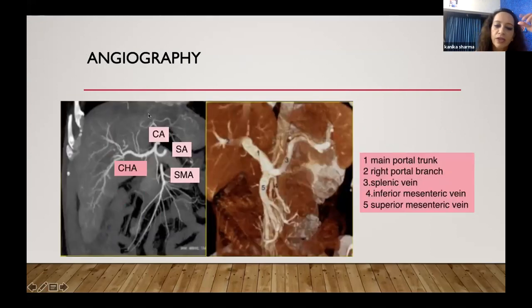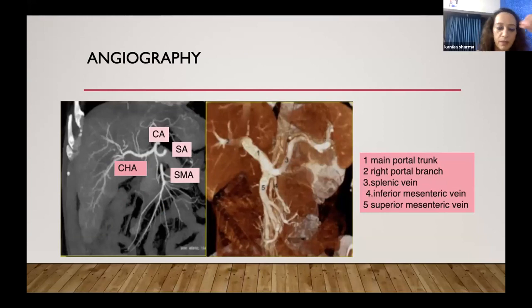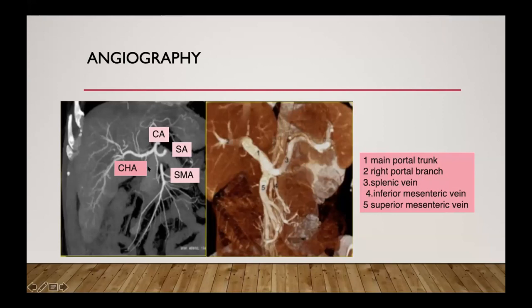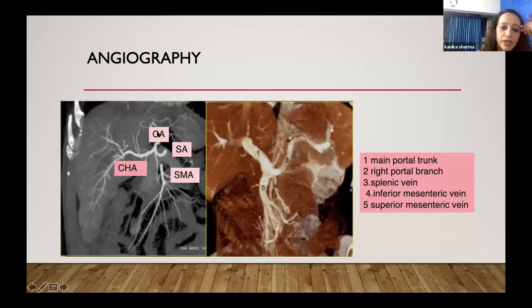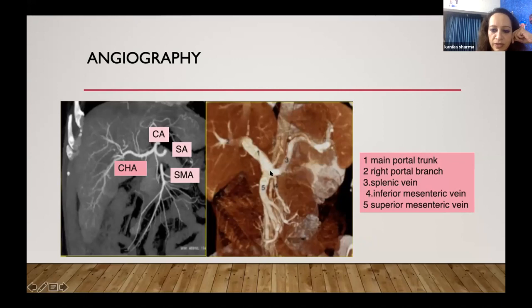Angiography is one of the best ways to understand the anatomy, but axial anatomy is most important for contouring. On angiogram you can appreciate the celiac artery arising at D12, dividing into three branches: splenic, common hepatic, and gastric. The superior mesenteric is caudal to the celiac. In the venous system, the main portal trunk and right portal branch are visible. The splenic is more tortuous. The superior mesenteric vein and inferior mesenteric vein can also be appreciated.